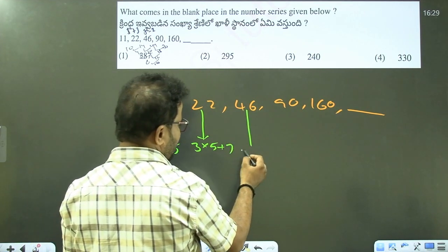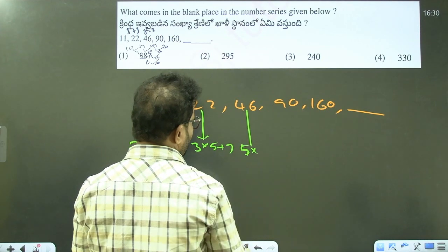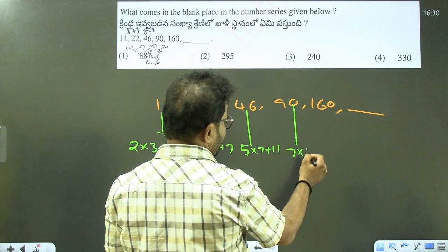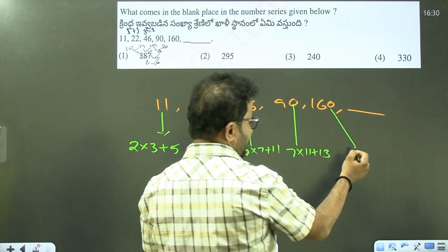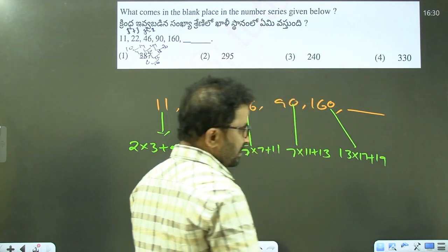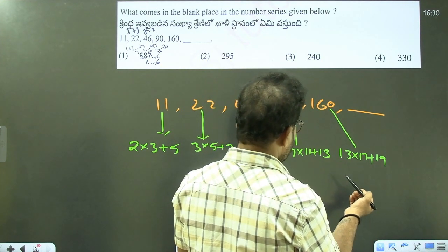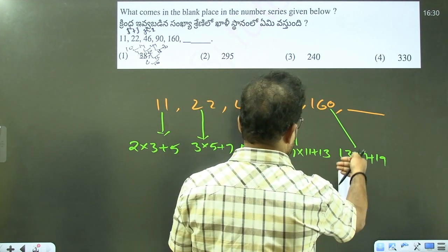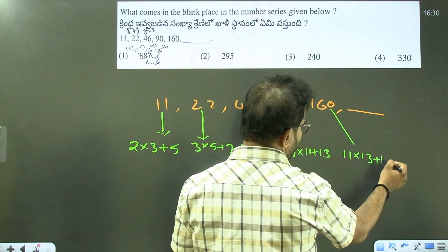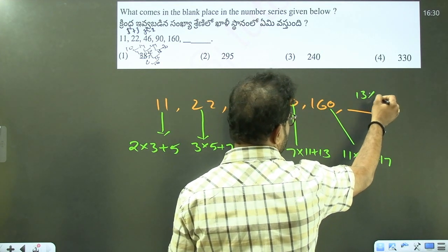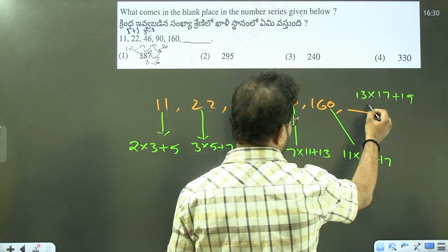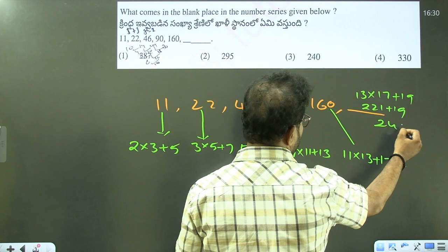3, 5, 7 are prime numbers. Next which is 5 into 35, and 35 plus 11 equals 46. Next which is 7 into 11; after the next consecutive prime number 13, then 17. 11 into 13 equals 143 plus 17. Then 13 into 17 is 221; next prime number is 19, so 221 plus 19 equals 240. 240 is the right answer.